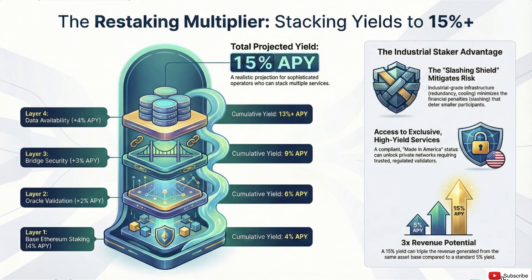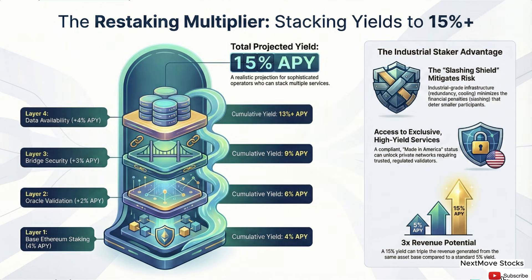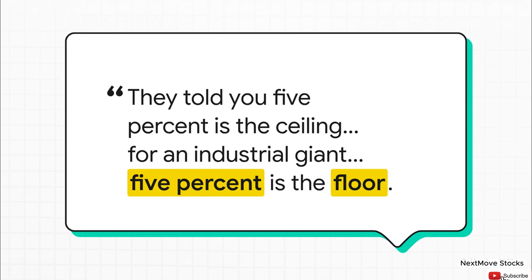Welcome. Today we are pulling back the curtain on one of the most exciting ideas in digital finance. It's called restaking. We're going to break down, step by step, how a single asset can do the work in multiple places all at once, creating what we're calling the layer cake of trust. Anything you've been told about earning yield in crypto — well, get ready to rethink it.